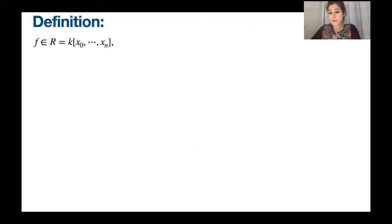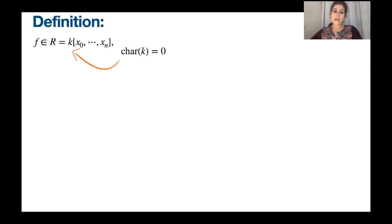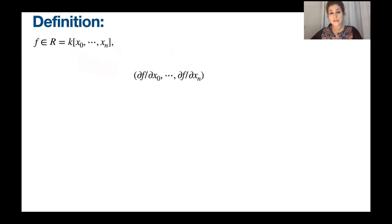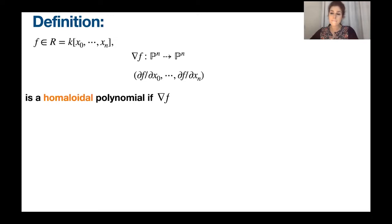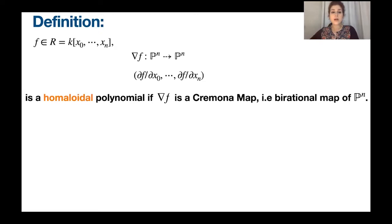Let me start from the definitions. Suppose we have a polynomial f in a polynomial ring R over a field k, where k is a field of characteristic zero because we are working with partial derivatives. When working with partial derivatives, the coefficients become out of our control. We consider the partial derivatives of this polynomial — you can look at these partial derivatives as an ideal of the ground ring, or as coordinates of a polar map. They define a rational map from P^n to P^n, and under the condition that this polar map becomes a birational map from P^n to P^n, we call f a homoloidal polynomial.